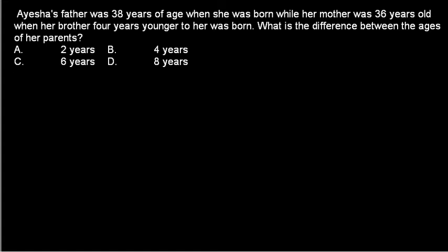Aisha's father was 38 years of age when she was born, while her mother was 36 years old when her brother, 4 years younger to her, was born. What is the difference between the ages of her parents? Though it seems complex, let's find it out.